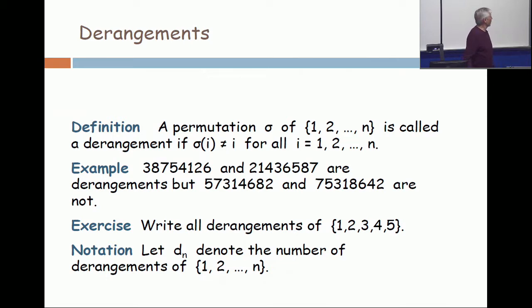I give you two examples. Look at the permutation of 1 to 8: 3, 8, 7, 5, 4, 1, 2, 6, and see that the integer i is never in position i.